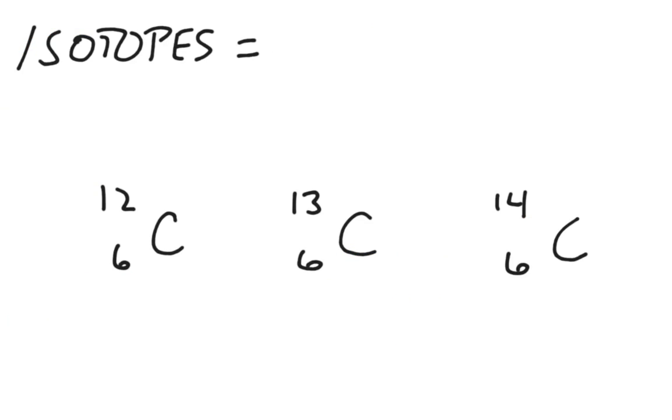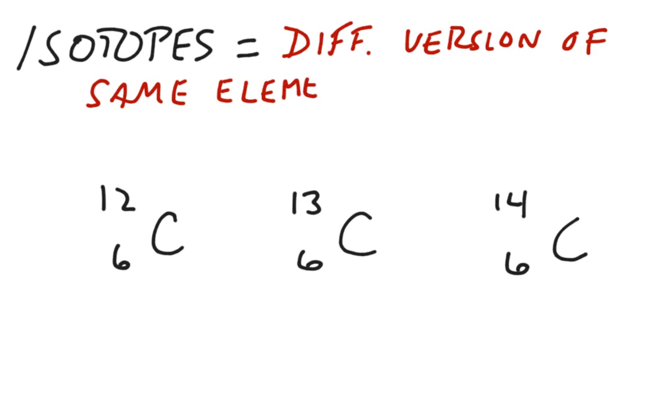Now, an isotope is a different version of the same element. Because the identity of the element is based on the number of protons, protons cannot change. Due to the fact that all atoms are electrically neutral and protons aren't changing, electrons cannot change. So the only thing that changes is the number of neutrons.